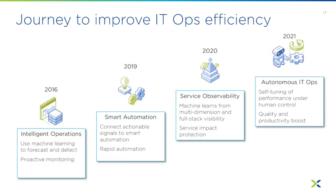These tiers allow us to continuously support the journey we're helping our customers with: making IT ops more efficient, starting from operations, adding automation, now expanding observability, and over the next 12 months we're also starting to develop autonomous IT ops capabilities — you'll be hearing more about that soon.